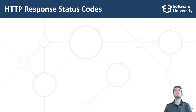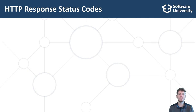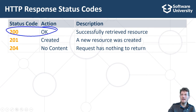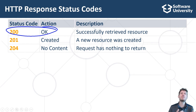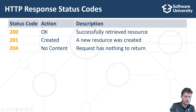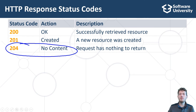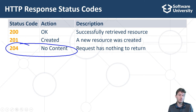HTTP status codes are three-digit integer numbers; the first digit serves for grouping. Status codes starting with 2 indicate a successful operation. The most used status code is 200 OK, which means the requested resource has been successfully retrieved and returned — for example, when you successfully open a news article. Status code 201 Created means a new resource has been created successfully, for example a new user was registered. Status code 204 No Content means the request was successful but there is nothing to return — for example, a chat message was sent successfully.